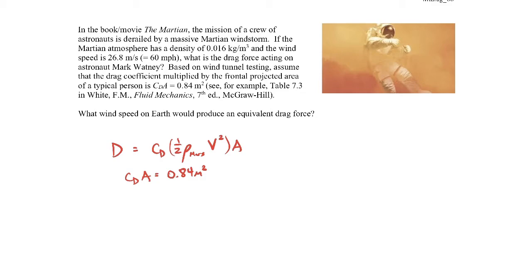We're also told that the density of the Martian atmosphere is 0.016 kilograms per cubic meter, and the velocity is 26.8 meters per second. These are all given in the problem statement, and they're typical values that you might have on Mars for the density of the Martian atmosphere and maybe this is the velocity during a windstorm.